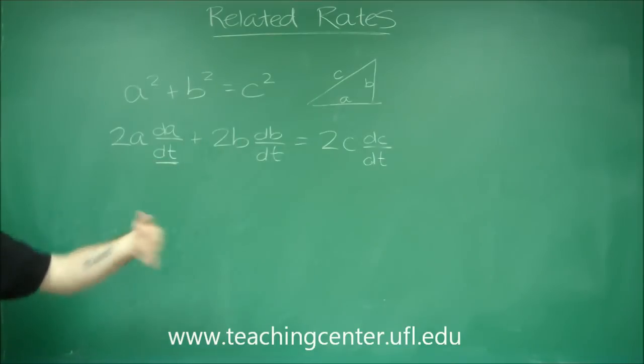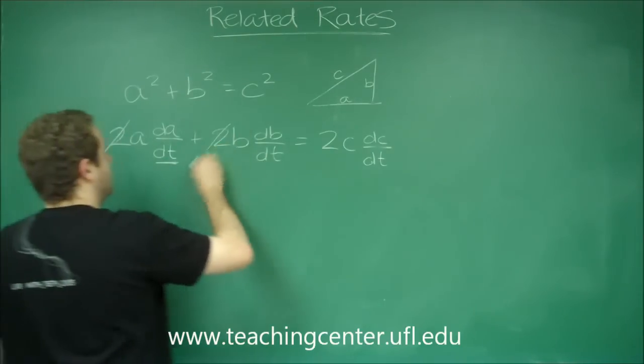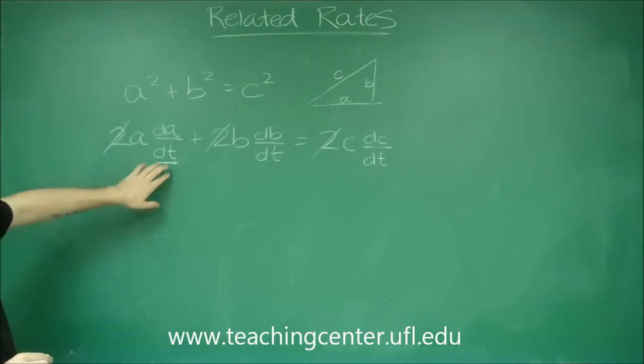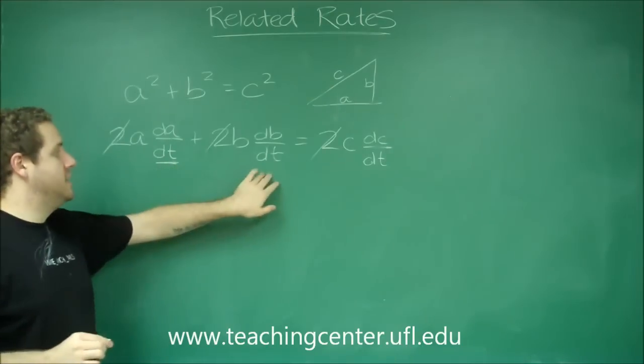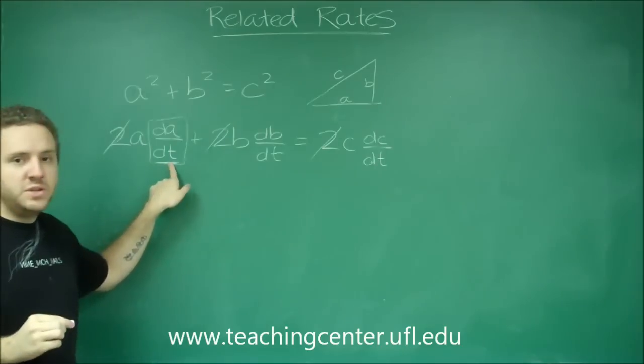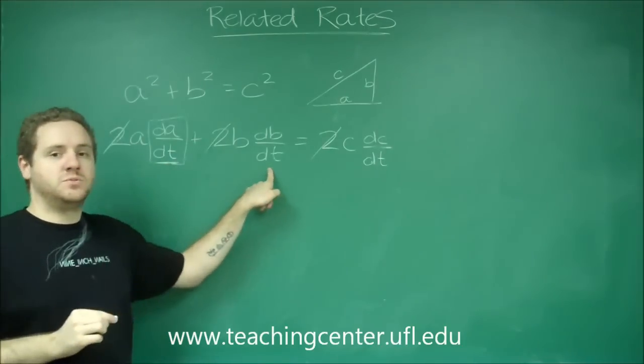You can see here I have a 2 in every term of the equation so those can cancel out. So like I said, if I knew DA DT and DB DT, remember these terms individually mean the rate at which A is changing, the rate at which B is changing, the rate at which C is changing.